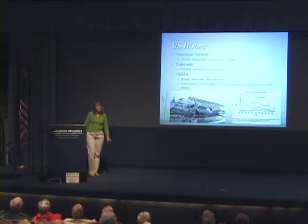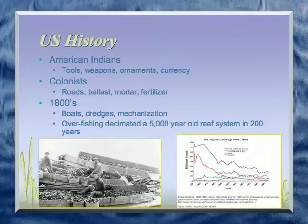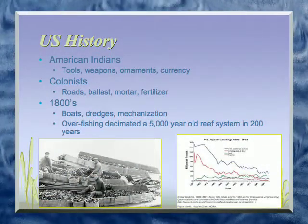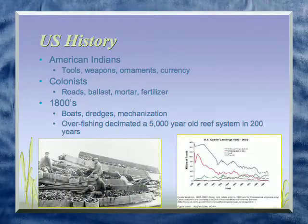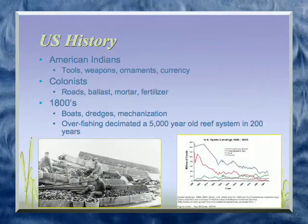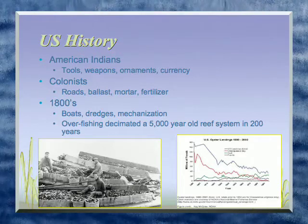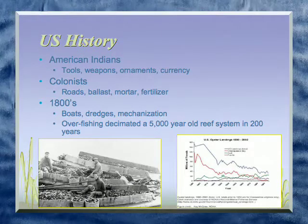Coming over to U.S. history, the American Indians used oysters for food but also for a lot of other things. Oysters are a very good food source — they're high in protein, vitamins, and minerals, and low in cholesterol, so they're healthy for you. The colonists also used them for other things besides food. Back then they were a poor man's food — everybody made a meal on oysters. You didn't just eat hors d'oeuvres like we do now.